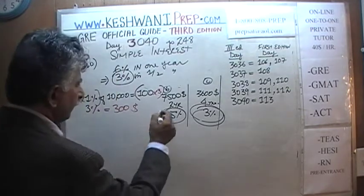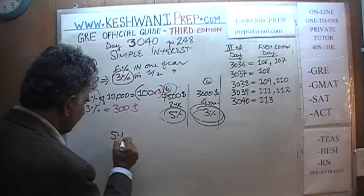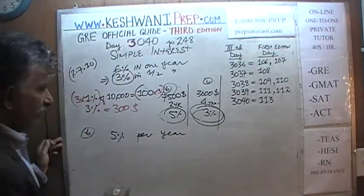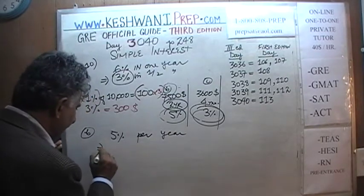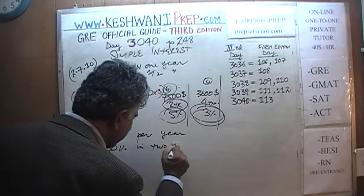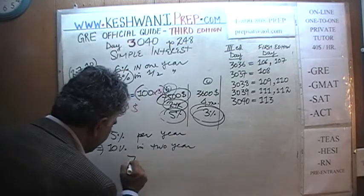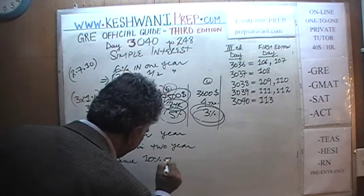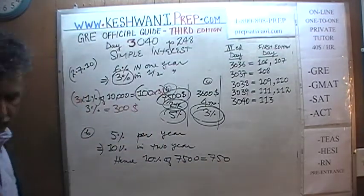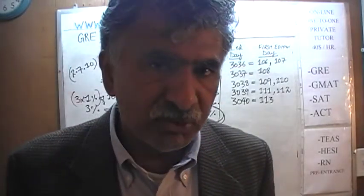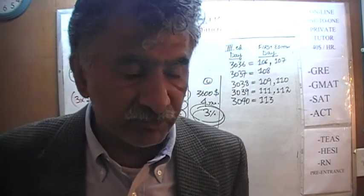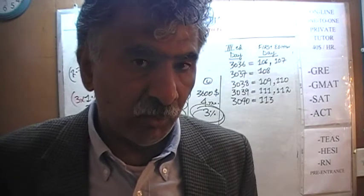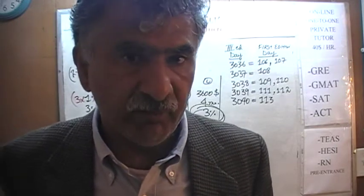Part B: we are told we will earn 5% interest — understood as 5% per year. We are keeping the money for 2 years, so if it is 5% in one year, that implies 10% in 2 years. 10% of $7,500 is simply $750. We earn $750 over 2 years because with simple interest there is no compounding — we earn 5% of the original principal each year, for a total of 10%.